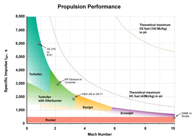Specific impulse is a measure of how effectively a rocket uses propellant or a jet engine uses fuel. By definition, it is the total impulse delivered per unit of propellant consumed, and is dimensionally equivalent to the generated thrust divided by the propellant mass flow rate or weight flow rate. If mass (kilogram, pound mass, or slug) is used as the unit of propellant, then specific impulse has units of velocity.